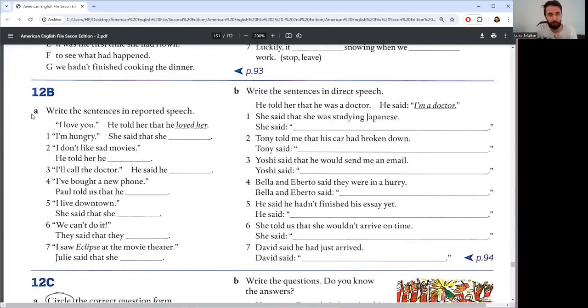We take the actual words. So here in the example is, I love you. He told her that he loved her because that speech was in the past. He told her that he loved her. Present simple, love, to past simple, loved. Pause the video and complete seven questions. Then we can check.